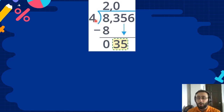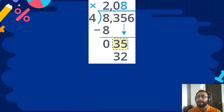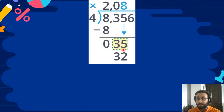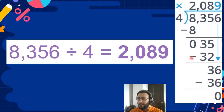How many 4's fit into 35? I think I know the answer — it is 8. 8 times 4 is 32. We subtract. 35 minus 32 is 3. So what do we do? We bring the next digit down, which is 6.